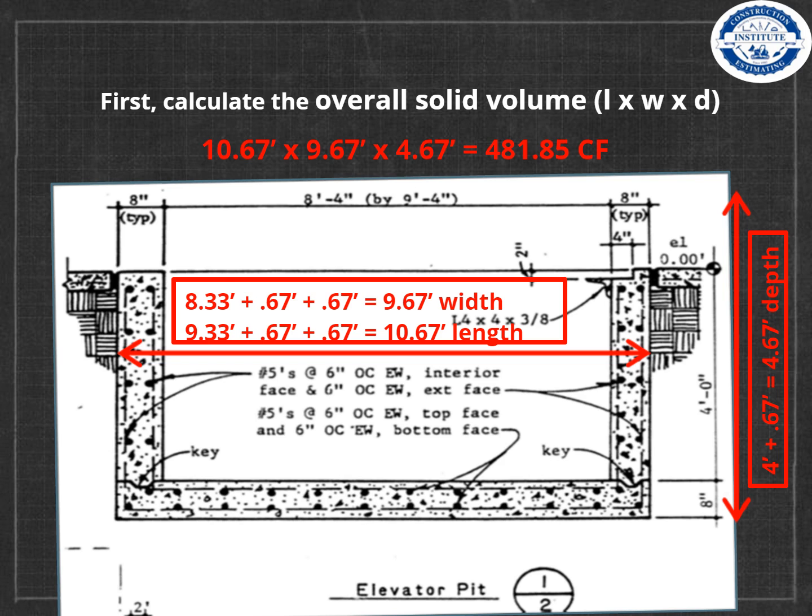Multiply the three dimensions and you'll have the total solid volume. The length (10.67 feet) times the width (9.67 feet) times the depth (4.67 feet) equals 481.85 cubic feet.